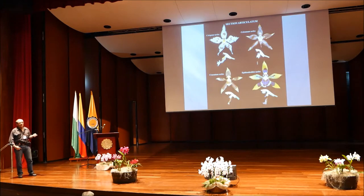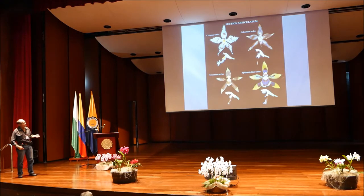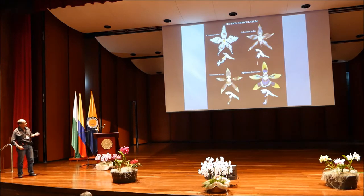Finally, in section Articulatum — the flexible, typical Odontoglossum, so to speak — we have four series: the Crispin series, Crisnatum series, Granitum series, and Epidendroidus series. The type for the genus Odontoglossum belongs here — that's the type species, Epidendroidus. The Crispin series consists of two species: Crispin and Nobilin. Very distinct. Can't be confused with much of anything.